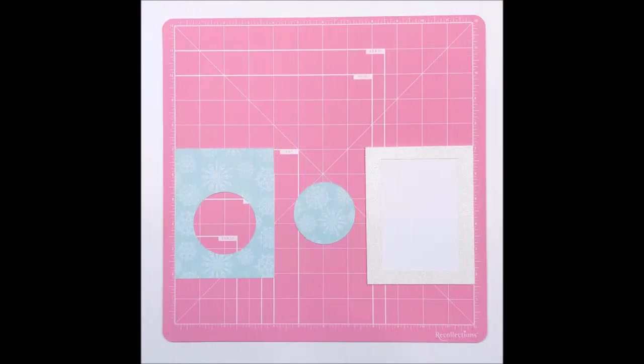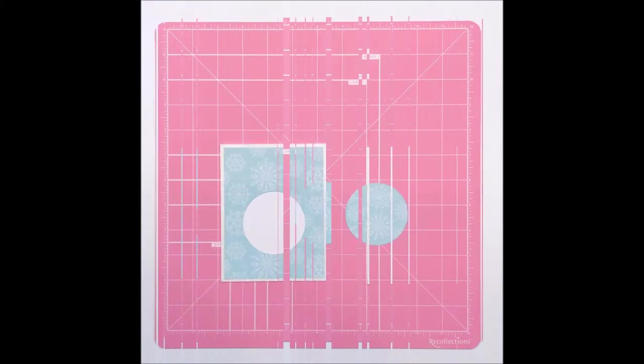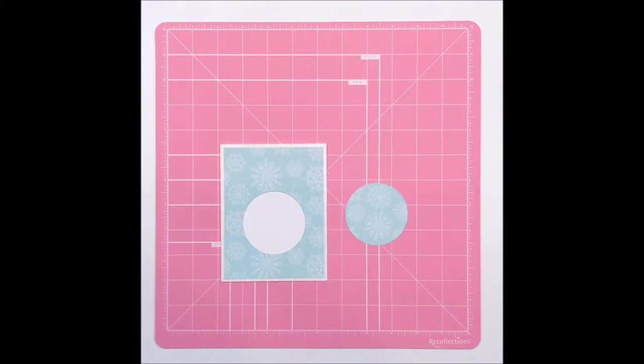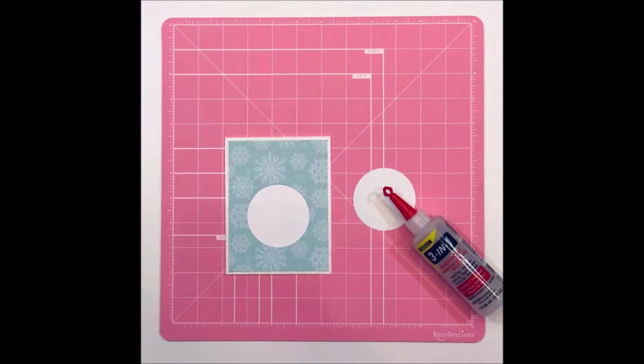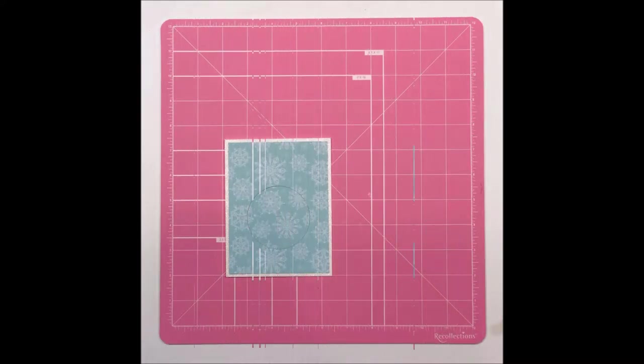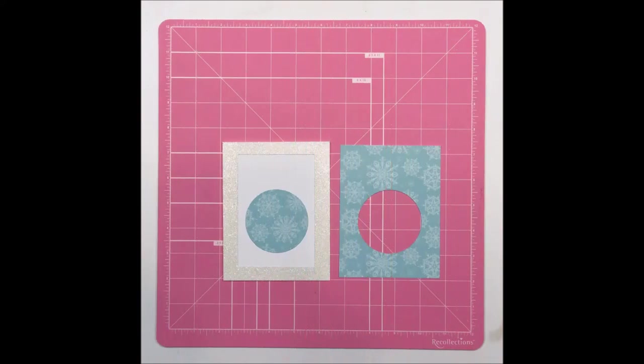Now I'm not going to throw that circle out because I'm actually going to be adhering it to the card base. To do that, I'm going to lay everything on the card base so that I know exactly where that circle needs to go, and then I'm going to glue it in place. Then I'll remove my card front and I will set both of those pieces aside and get on to the next part.